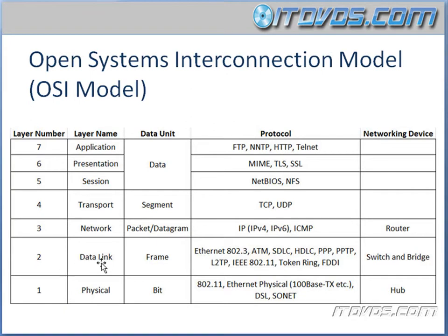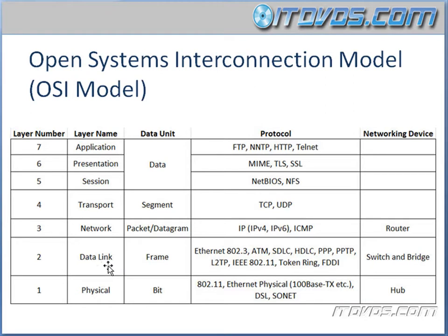The next layer is layer 2, our data link layer. At this level, our packet is encapsulated and it becomes a frame or a data frame. This level is where switches and bridges function. They use MAC addresses to actually send the data to the correct physical device. So layer 3 uses logical addresses, while layer 2 uses the physical MAC address that is actually burned onto the network card.